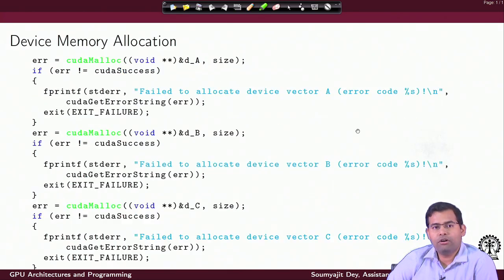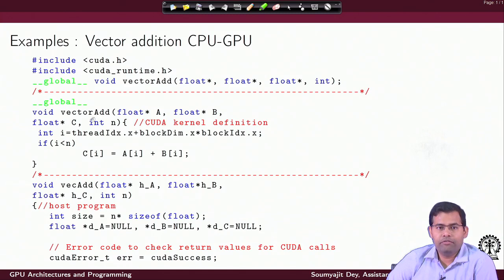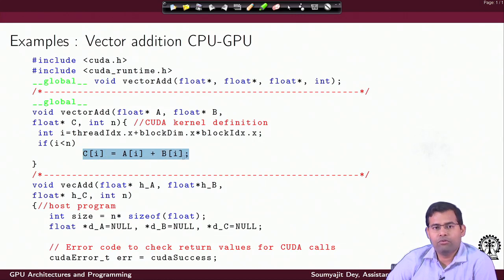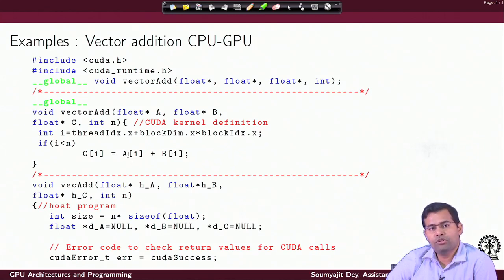Now let us look at the implementation of the kernel. This is how a CUDA kernel is defined. Inside vector_add, we compute an index that decides each thread's behavior, and then we have the familiar code where C[i] gets the value A[i] plus B[i]. The difference from the CPU side is that if the GPU has N number of scalar processors, that many threads are launched to do all these additions in parallel, making all vector additions happen simultaneously.